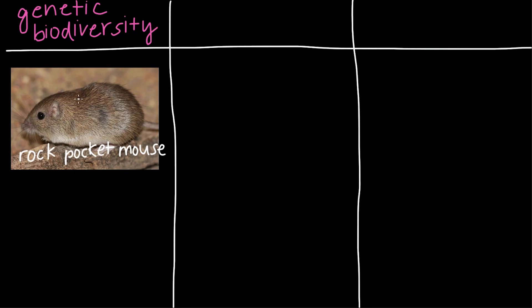So this is a species that can actually be found right here in the Sonoran Desert. And the cool thing about this mouse species is that there exist both tan and black-colored rock pocket mice. So even though both colored rodents come from the same species, their genetic biodiversity creates mice with completely different traits.